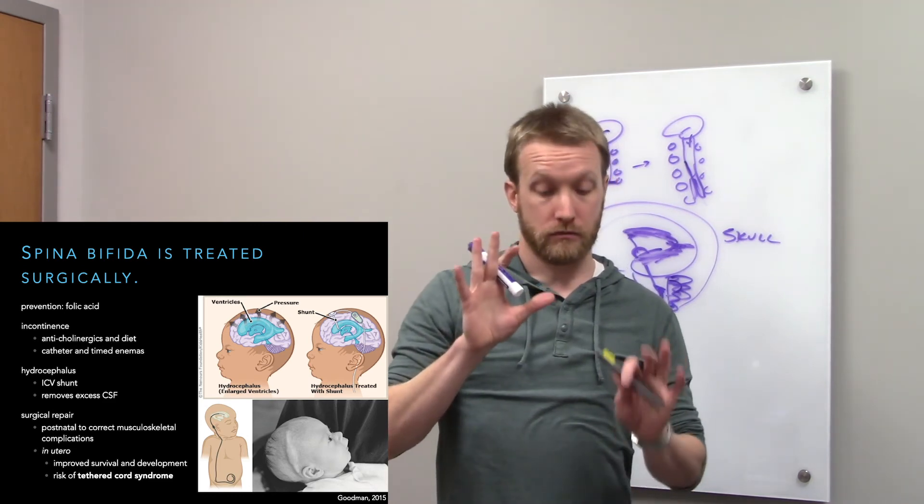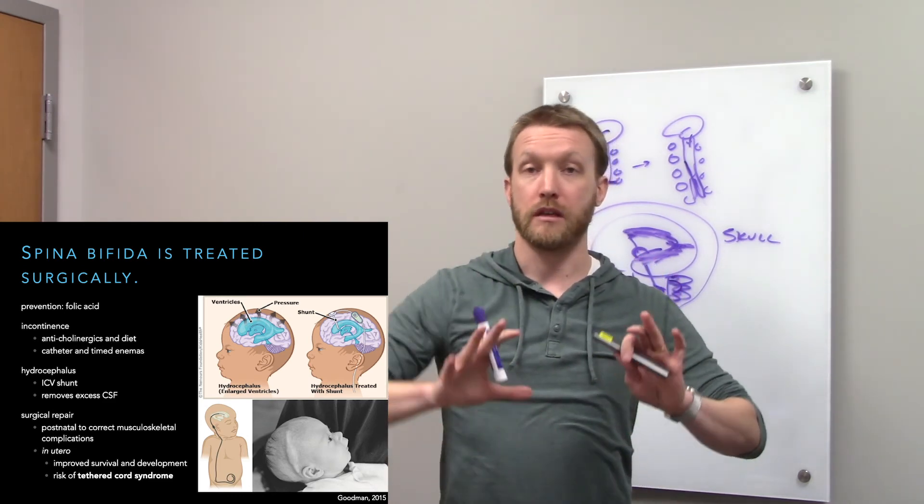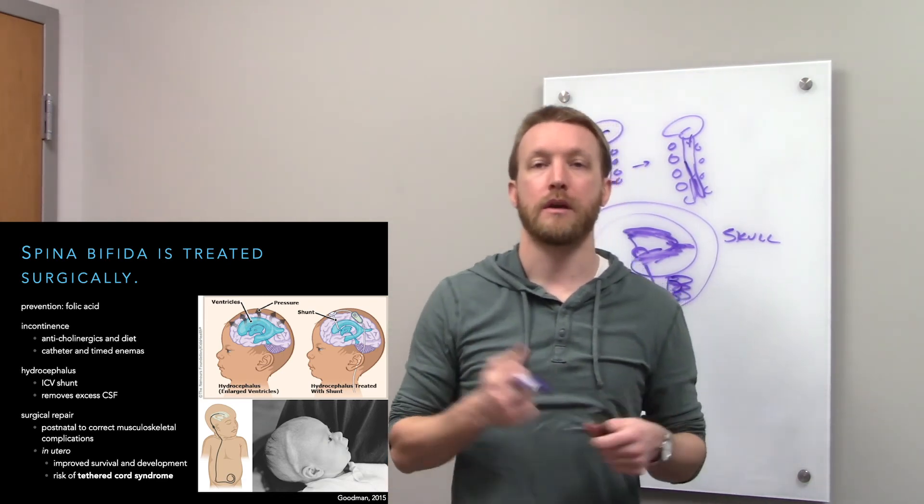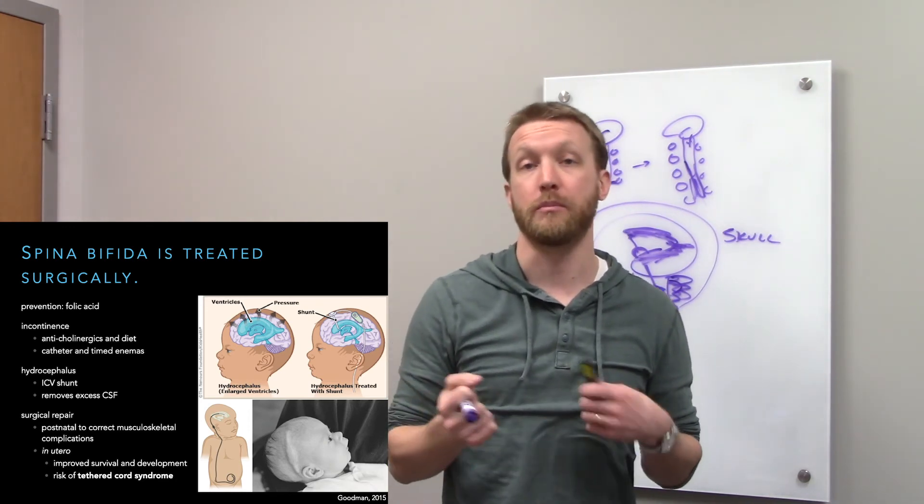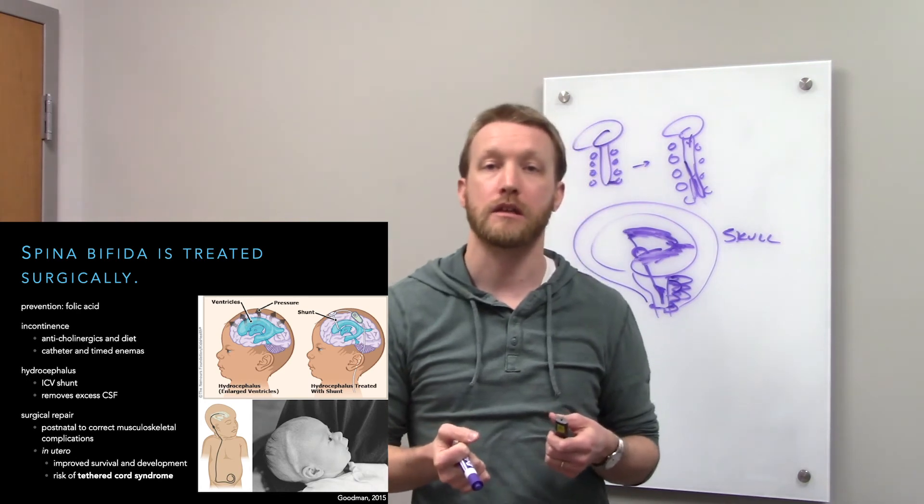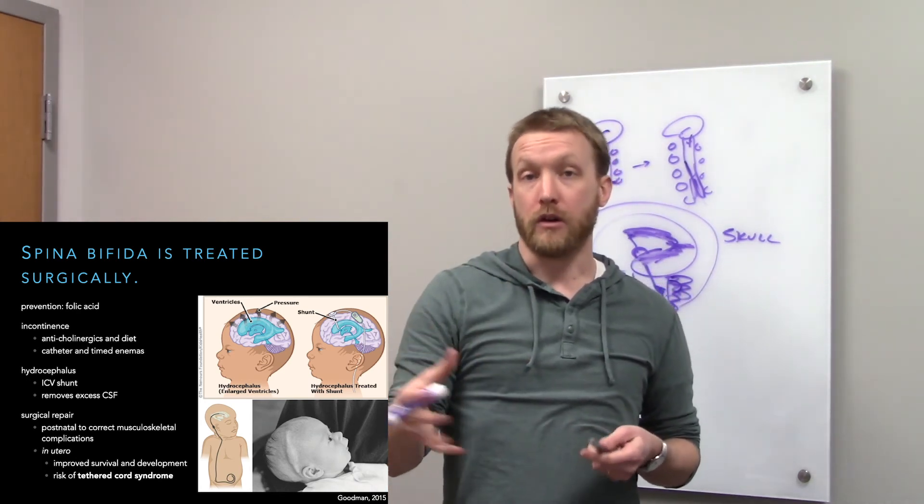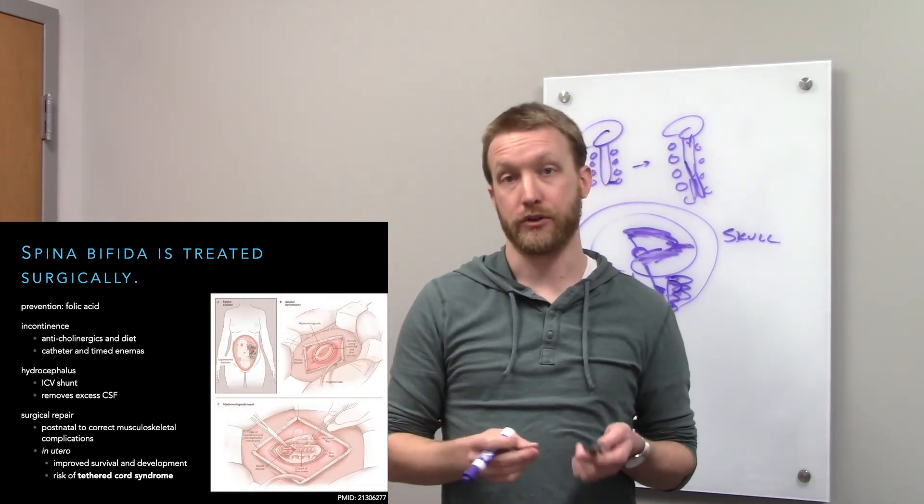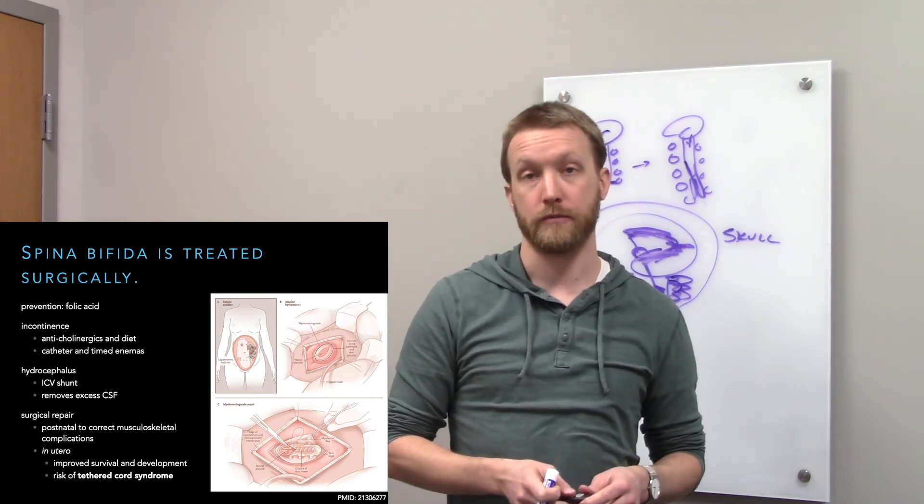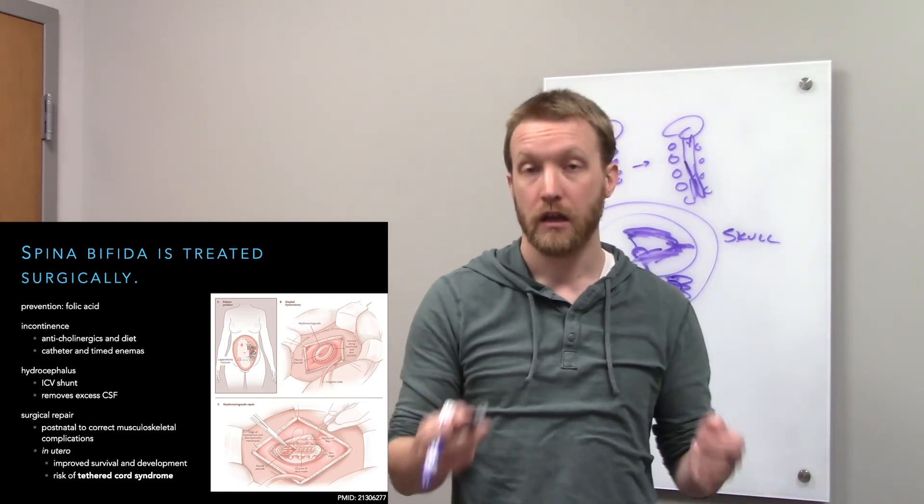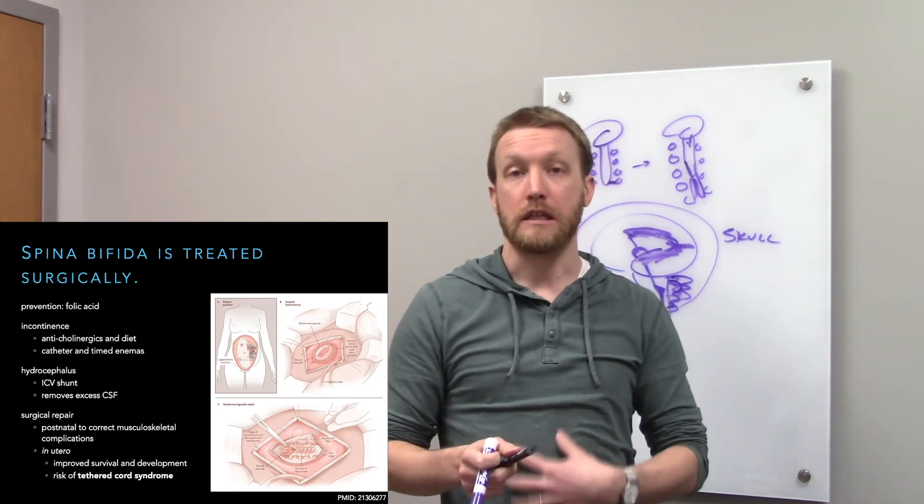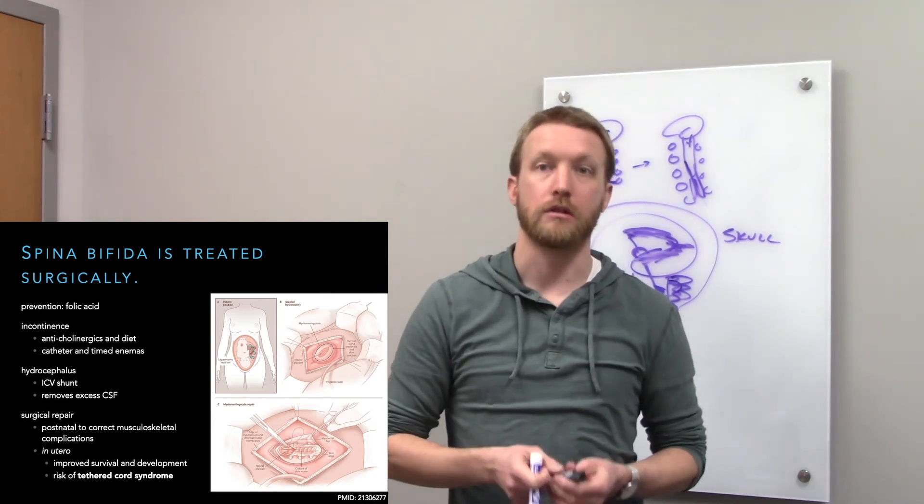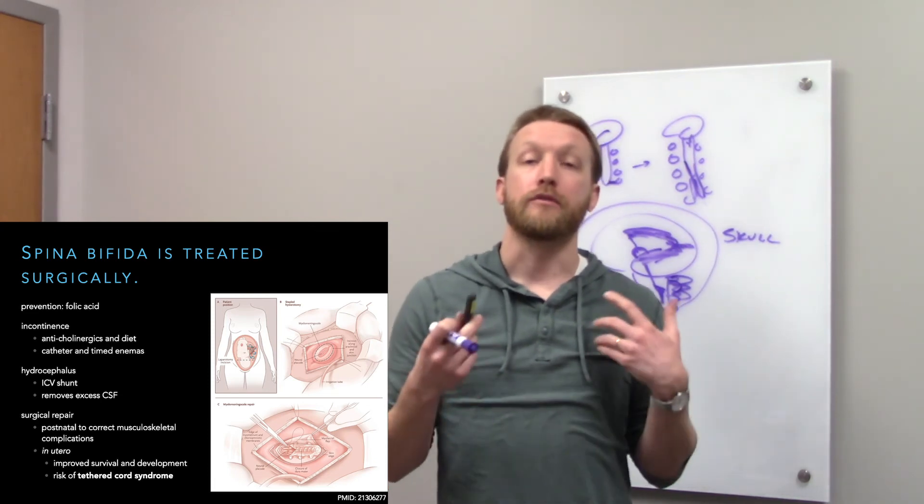The real first treatment that has to happen with spina bifida is surgery. This can happen after birth to repair the neural tube defect or also to repair those musculoskeletal abnormalities that can occur. Even better, though, is to have prenatal surgery where surgeons go in in utero and repair the neural tube defects. You can see a little schematic over there. When the neural tube defect is detected, they open up while the baby is still inside the womb, repair. So close the neural tissue, close the dura, and hopefully prevent further damage.